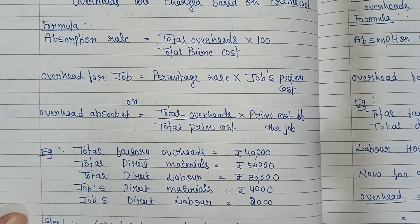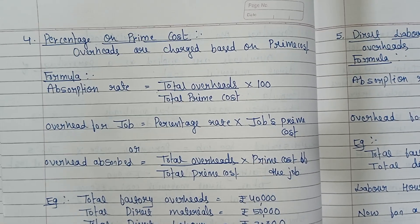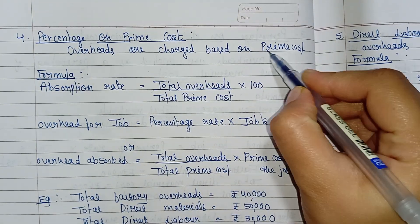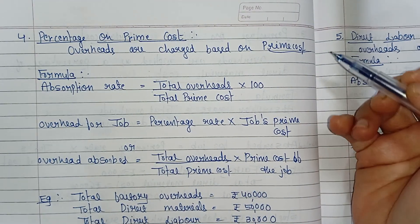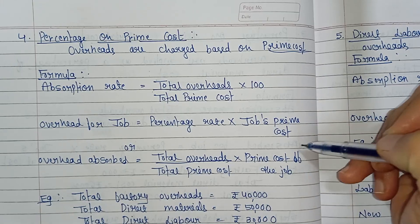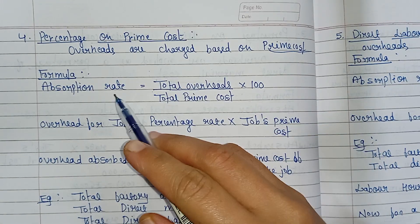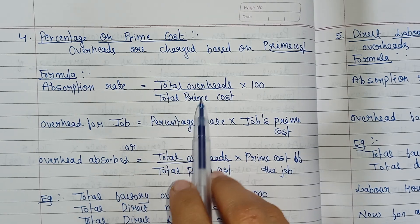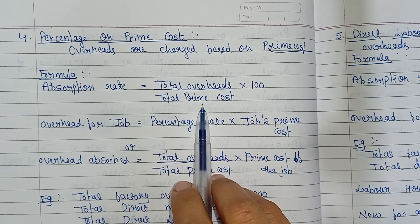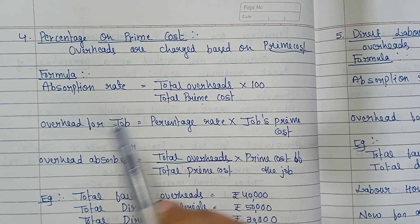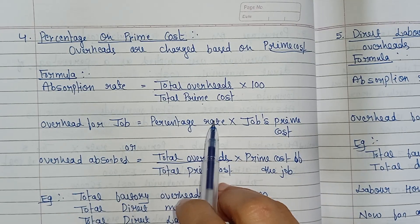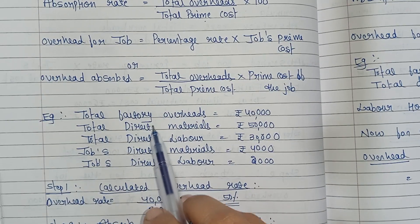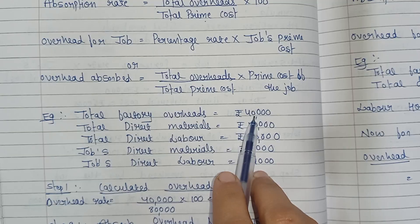The fourth method is percentage on prime cost. Here, overheads are charged based on prime cost. Prime cost means direct materials plus direct labor plus direct expenses. The formula is: absorption rate equals total overheads divided by total prime cost, multiplied by 100. Overhead for a job equals the percentage rate multiplied by the job's prime cost.